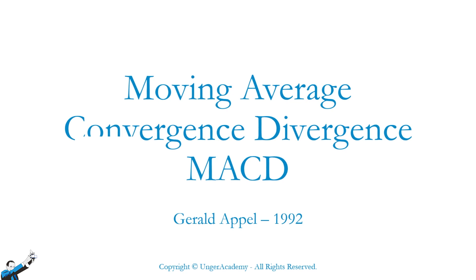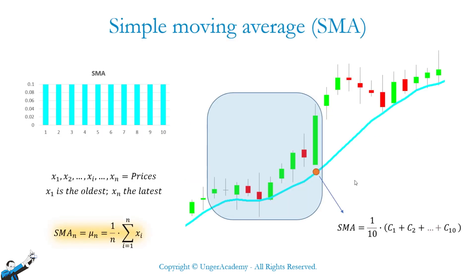So let's begin immediately with what can be considered one of the most simplest concepts in technical analysis, that is, the Simple Moving Average, or SMA. As you know, the Simple Moving Average is nothing more than the sum of the prices, usually the closes, divided by the number of the prices considered. So here we can see a Simple Moving Average at 10 periods, considering 10 closes — 3, 6, 9, and 10, the last one — which corresponds to the sum of the closes divided by the number of the closes considered, which is 10.